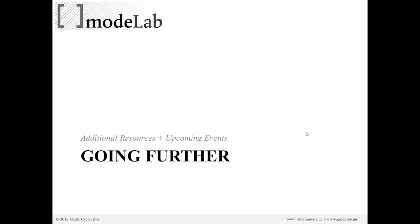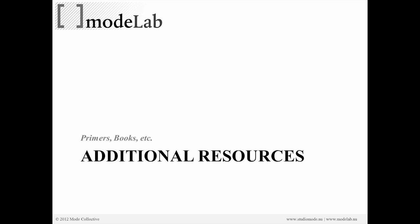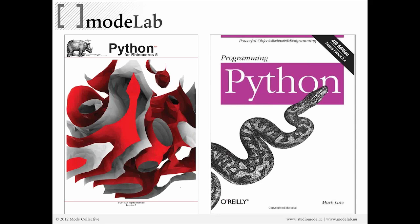Let's carry forward and talk about how you can go further. There are some additional resources we'd like to point you towards, both hard resources and online resources. In terms of primers and books, there's the Python for Rhino 5 primer written by Steve Baer and Skeller-Timmitz, which is specific to using Python in Rhino. You also have the Programming Python O'Reilly book, which is a more general overview of Python syntax beyond just working with it in Rhino.